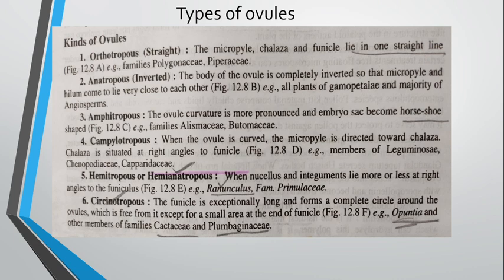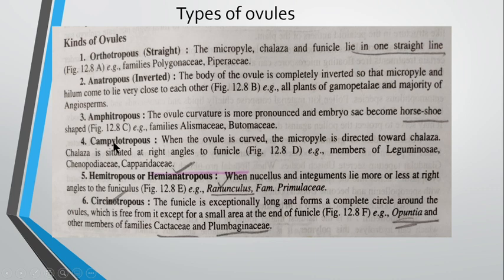There are six types: orthotropous — examples from family Polygonaceae and Piperaceae; anatropous — found in the majority of angiosperms, especially plants of Gamopetalae where petals are in a fused condition; amphitropous — families Butomaceae and Alismataceae, where the embryo is horseshoe-shaped; campylotropous — the ovule is curved, with members from Leguminosae and Chenopodiaceae.